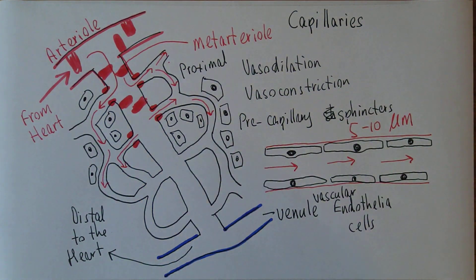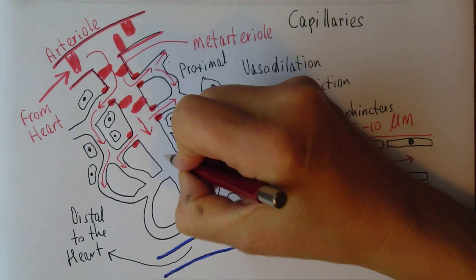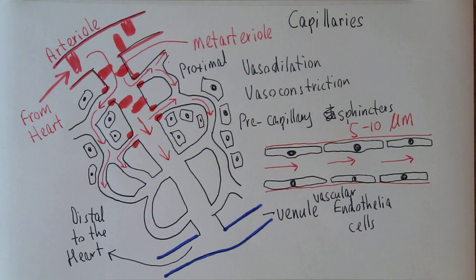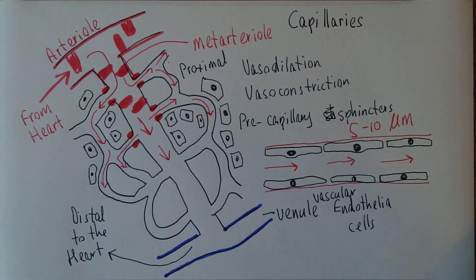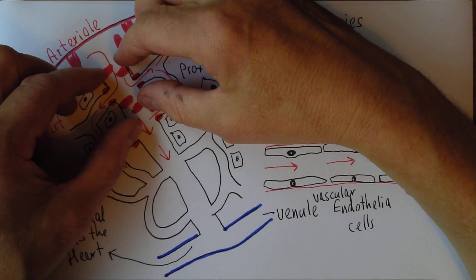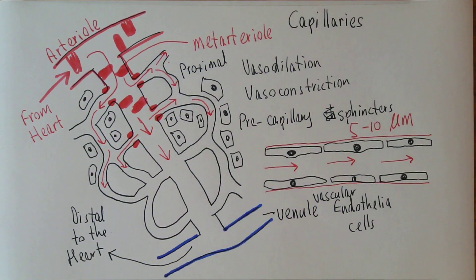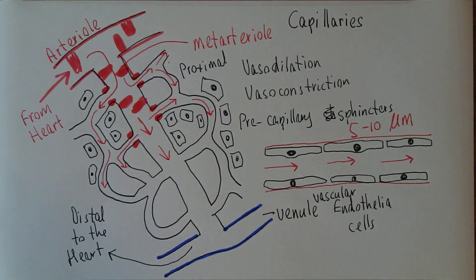As the blood goes through the collection of capillary beds, it's going to be progressively deoxygenated. Some blood will go straight through while other blood will go around the capillary loops. How much blood goes through the capillary loops depends on the vasotone of the sphincters. If the pre-capillary sphincters are relaxed and dilated, more blood will get into the capillaries, increasing perfusion of the tissue — there's going to be vasodilation.